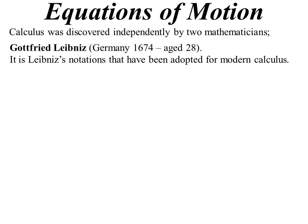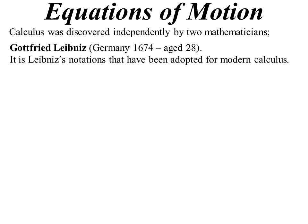The equations of motion, this is what calculus I guess originally started, they wanted to study the motion of the planets and things like this. So the equations of motion, basically there were two mathematicians who were pretty much involved in the creation of calculus. The first was a German, Gottfried Leibniz. Now it's his notations that we tend to use, so the integral symbols, dy/dx, all that sort of stuff. He came up with this when he was 28 years old.